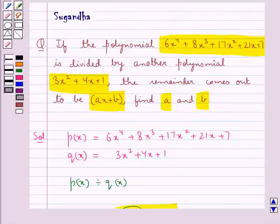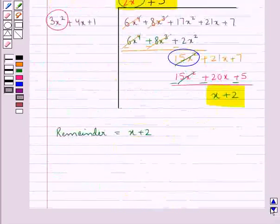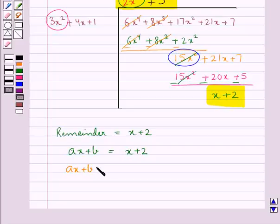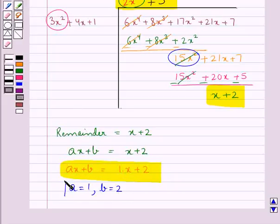In the question we have that the remainder comes out to be ax plus b. So we compare ax plus b with x plus 2. That is, ax plus b is equal to 1 times x plus 2. When we compare these two terms we find that a is equal to 1 and b is equal to 2. So we have got the values for a and b.